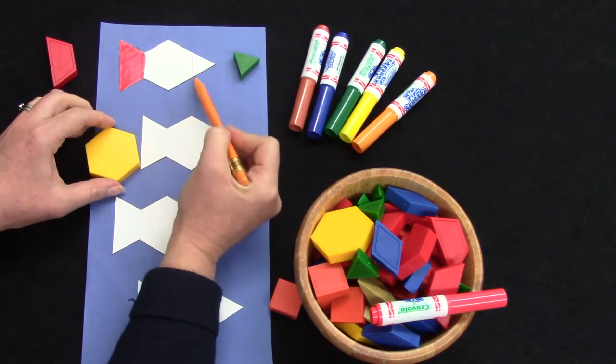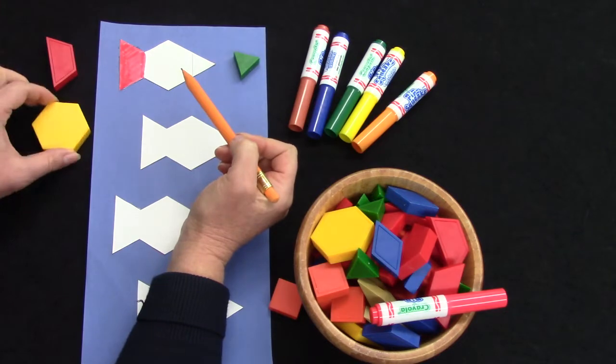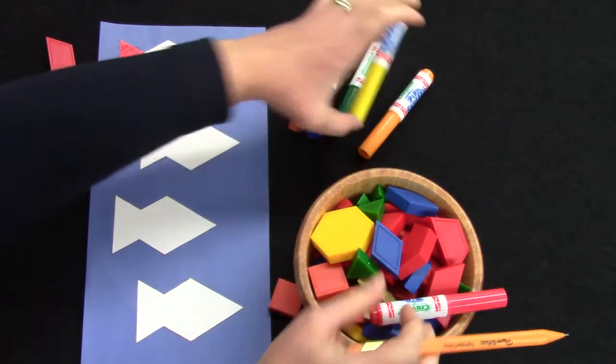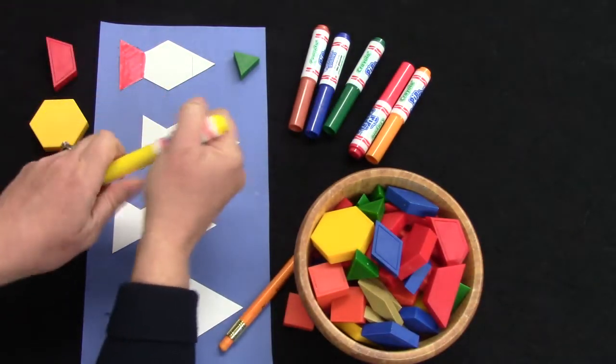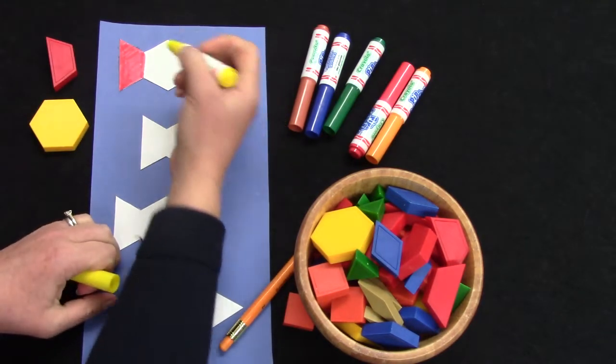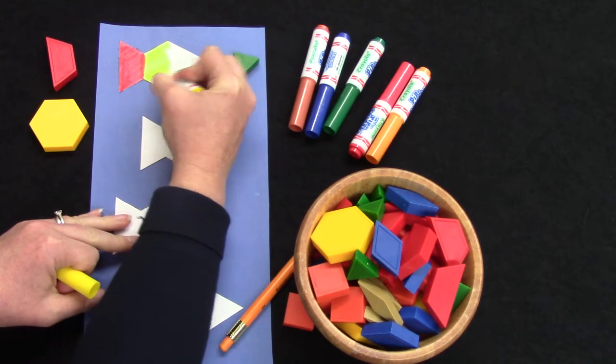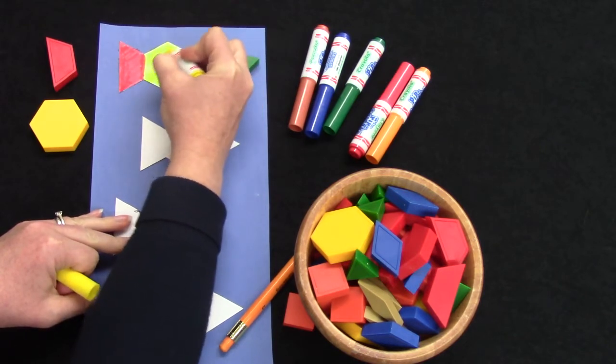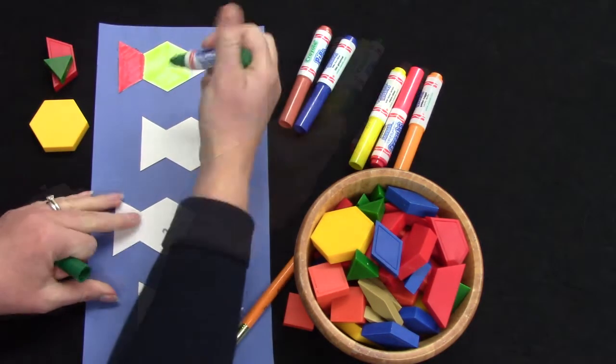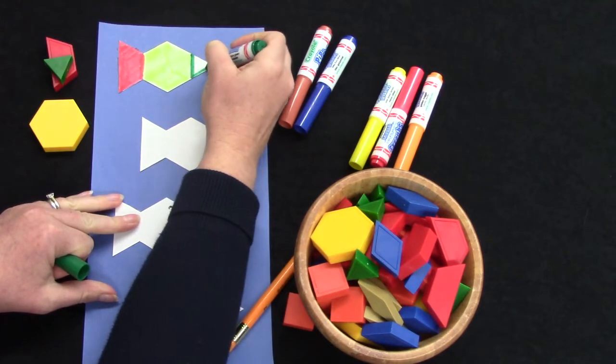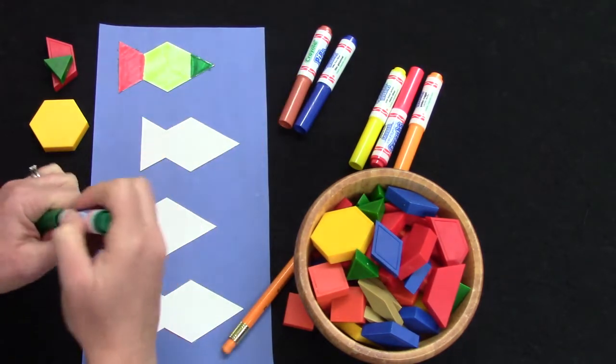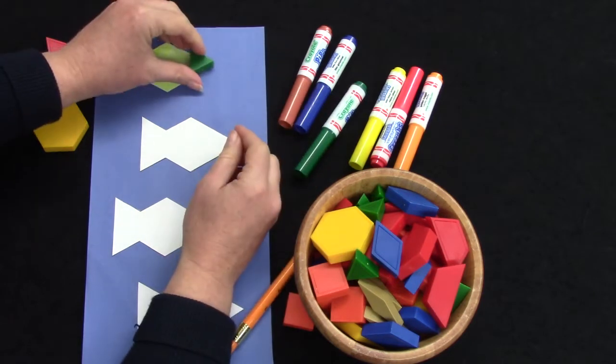So now I have a hexagon and my hexagon was yellow, so I'm going to use my yellow marker and I am going to color this part yellow. Let's see if it fits.